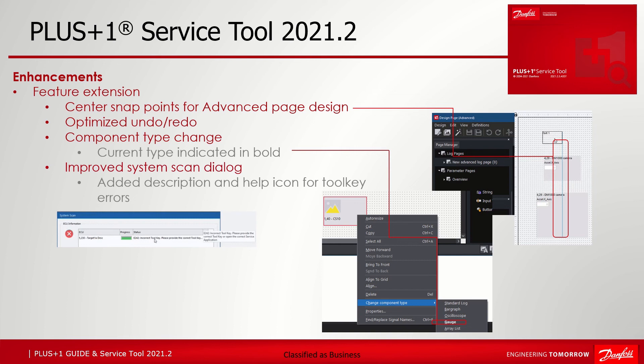The last extension relates mostly to the incorrect tool key error when scanning. The user gets a notification during system scan if a P1D file has not been opened. A service person new to the tool gets confused when the 'incorrect tool key' message appears. That's why the old description 'incorrect tool key' has been modified with a longer description: 'Please provide the correct tool key or open the correct service application,' along with a link to the help via the help icon to get to the tool key section in the online help.